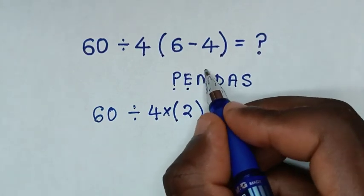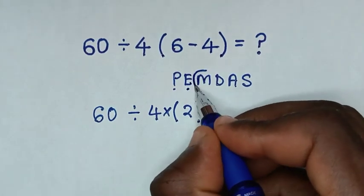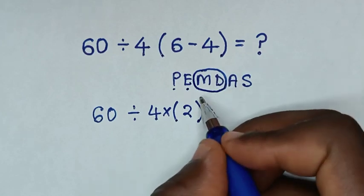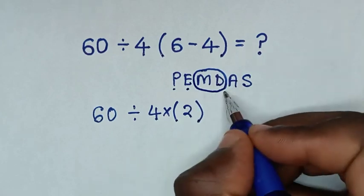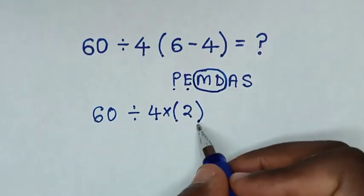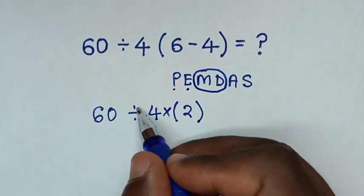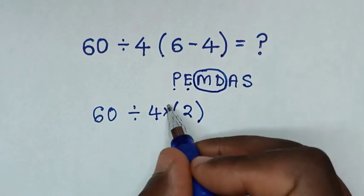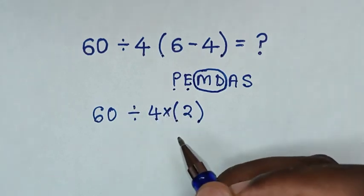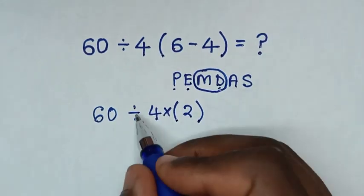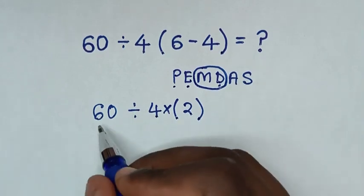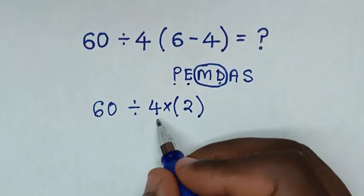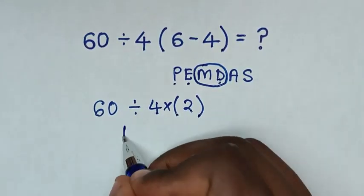Next step, we do the multiplication and division operations according to what starts first. From this problem, it starts first with the division operation, then the multiplication operation. So we start to deal with this division of 60 divided by 4.